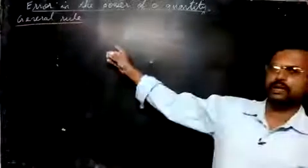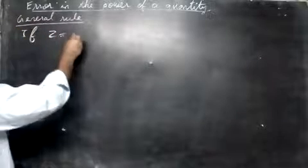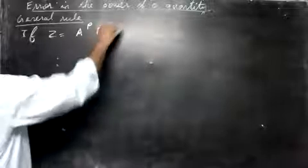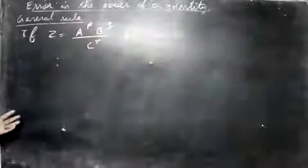Let us study a simple general rule in error of a power of a quantity. Let's take an example here. Suppose if z is equal to a to the power p, b to the power q, divided by c to the power r. Then what will happen? You must find the maximum fractional error.